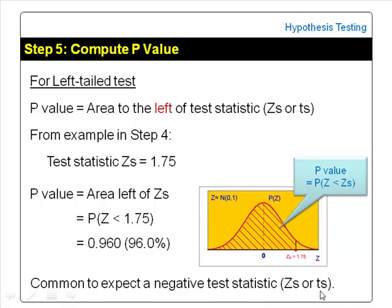This is because we suspect that the sample mean is less than the hypothesized mean. However, it is uncommon to get a positive test statistic in a left-tailed test, as shown in the above example, or a negative test statistic in a right-tailed test. When this happens, it indicates that what the researcher suspected is in the wrong direction — for example, the test statistic shows an increase in weight while the researcher suspected a decrease and did a left-tailed test.